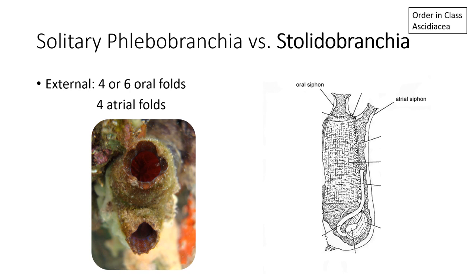If instead you have four or six oral folds and only four atrial folds, then you have a species in the order Stolidobranchia. In this picture on the left, the oral siphon is at the top of the photo and the atrial siphon is towards the bottom. We can count four large folds, also known as lobes, in the oral siphon, and then the same four folds in the atrial siphon. This would be a Stolidobranch.